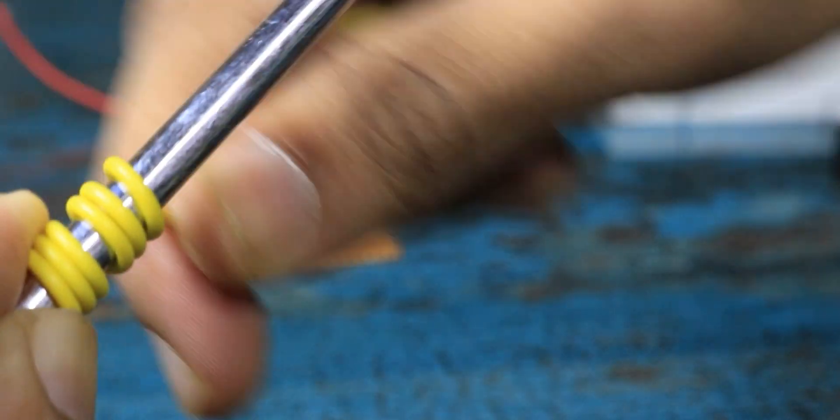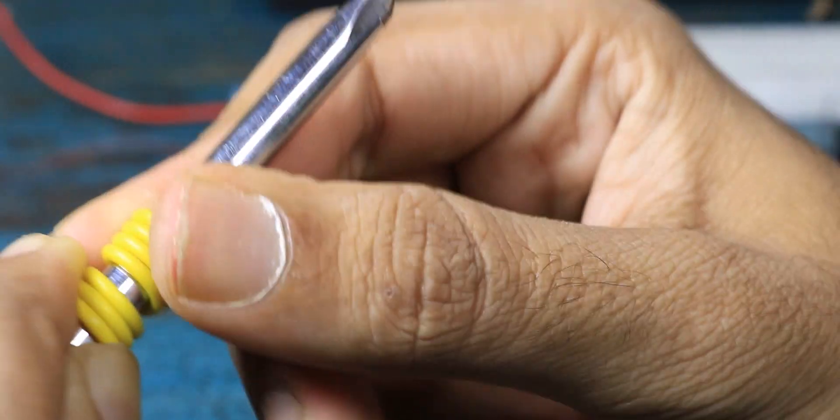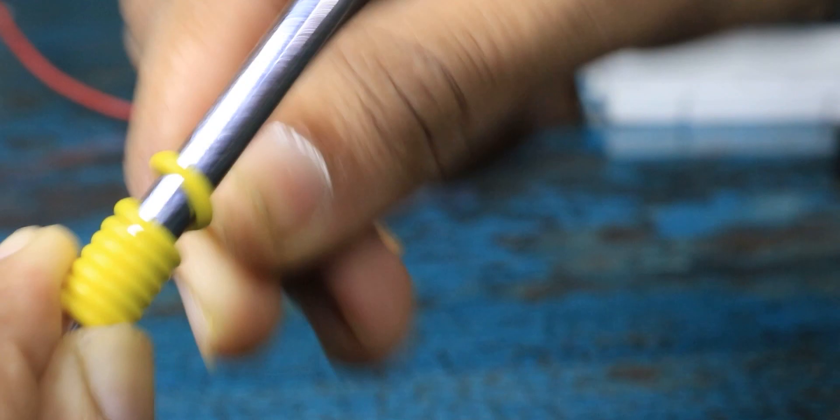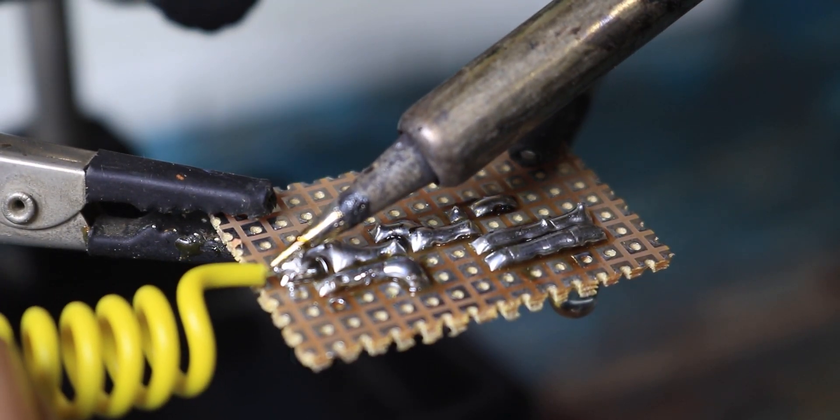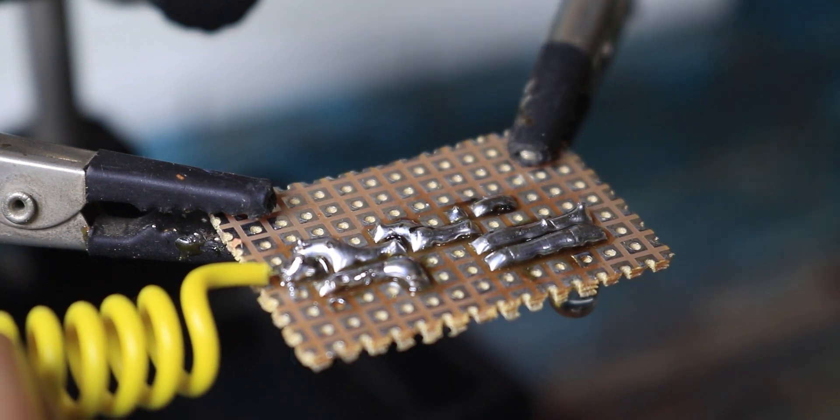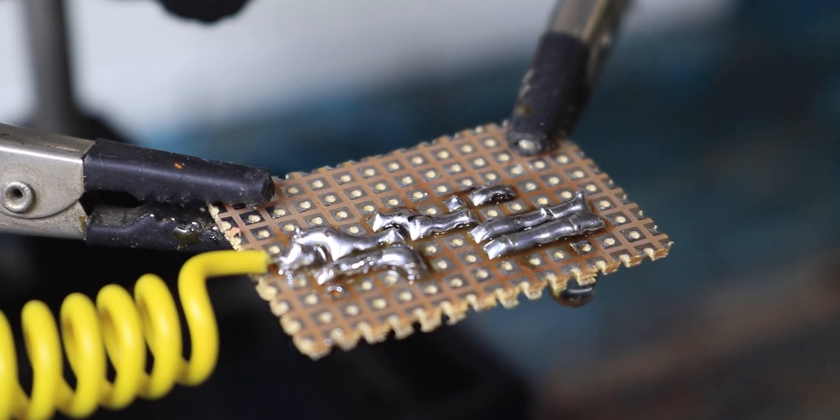Once the circuit is complete, we need to attach the antenna which is basically a capacitor. For that we are going to use a long piece of wire and wound it around the screwdriver to make a helical antenna and simply solder its one end to the base of first transistor.